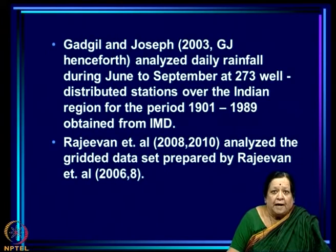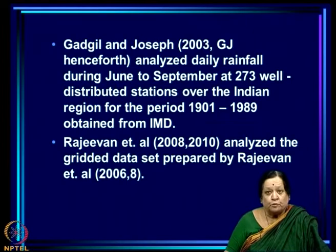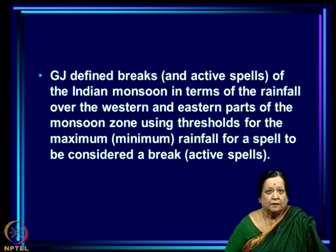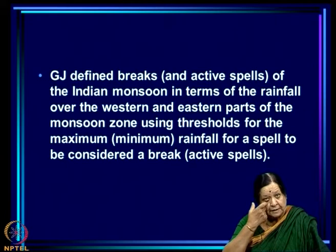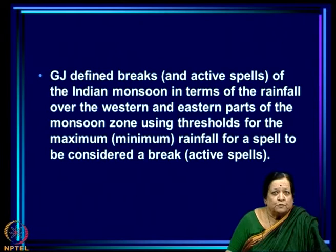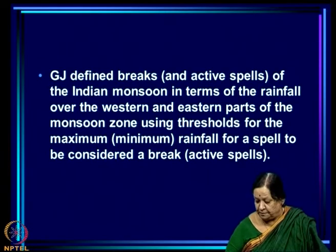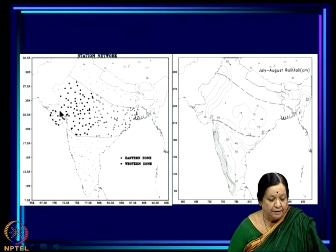On the other hand, Rajivan et al. had prepared and presented in an earlier set of papers gridded data for the Indian region — initially at 1-degree resolution, later at higher resolution of 0.5 degrees — and they used that grid data as the basis. Gadgil and Joseph, which I will henceforth call GJ, defined breaks and active spells of the Indian monsoon in terms of rainfall over the western and eastern parts of the monsoon zone using thresholds for maximum and minimum rainfall. This is the monsoon zone and the network of stations that Gadgil and Joseph had at their disposal.